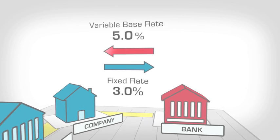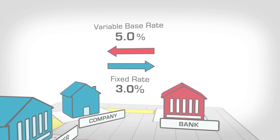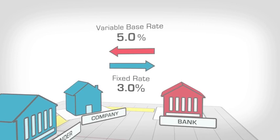Instead of seeing multiple cash flows on your account, the bank calculates the net difference between the variable base rate it pays you and the fixed rate that you pay.